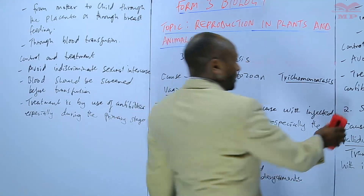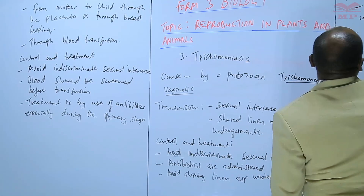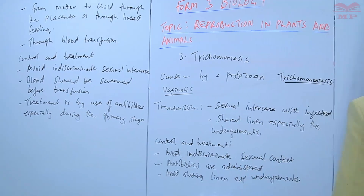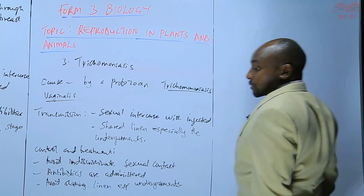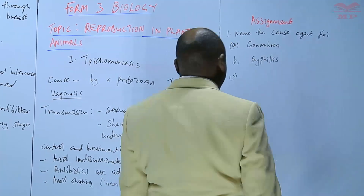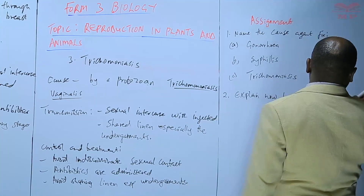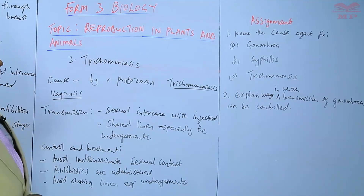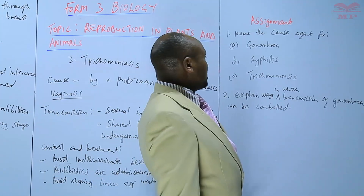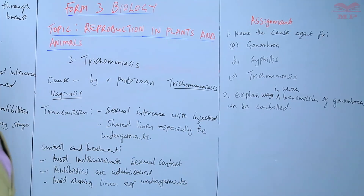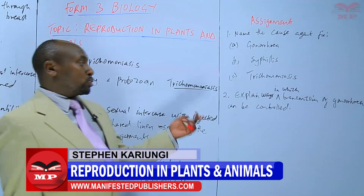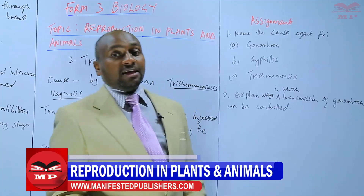Those are three sexually transmitted infections. You can come up with some questions from there before we proceed to the others. First question: name the causative agent for (a) gonorrhea, (b) syphilis, and (c) trichomoniasis. Number two: explain the ways in which transmission of gonorrhea can be controlled — the methods that can be used to control the transmission. We'll stop there until the next lesson. Goodbye.